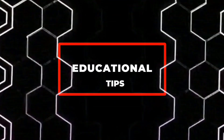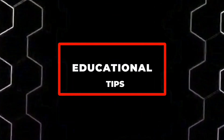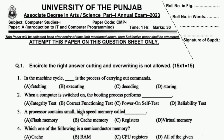Assalamu alaikum, hope you will be fine. This is for 3rd year computer science 2023, Punjab University. Let's start. The machine cycle is the process of carrying out or executing commands. When a computer is switched on, the booting process performs a power-on self-test. A processor contains small high-speed memory called cache memory.